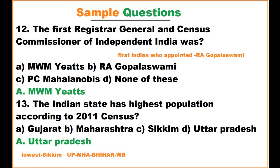Which Indian state has the highest population according to the 2011 census? The options are Gujarat, Maharashtra, Sikkim, and Uttar Pradesh. The answer is Uttar Pradesh, and the lowest is Sikkim. The order from highest to lowest is: Uttar Pradesh, then Maharashtra, then Bihar, then West Bengal.